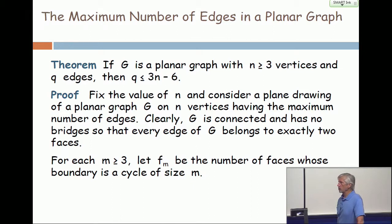There's clearly some bound because it can't have any more than N choose two edges. That's the number of edges in a complete graph. So we're going to take one which has the maximum number, and that will depend on N, and then we're going to argue about it.